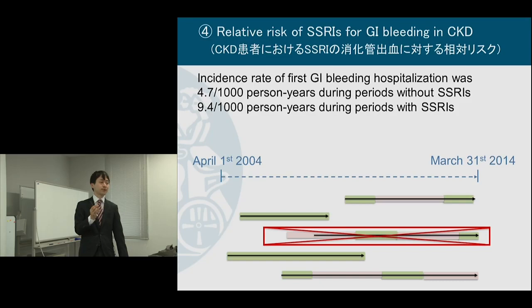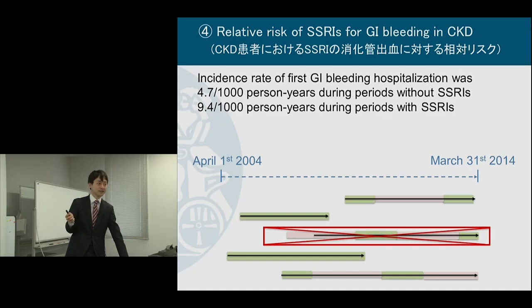Since you only include patients with the outcome in case-only designs, you cannot estimate absolute incidence. Case-crossover could be an option to estimate relative risk, but I didn't use it. So the period-based cohort approach was the right choice for my purposes. Thank you.